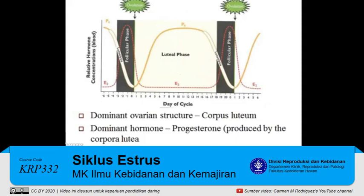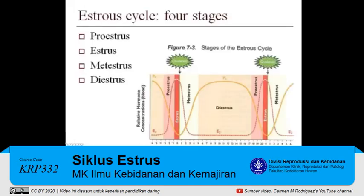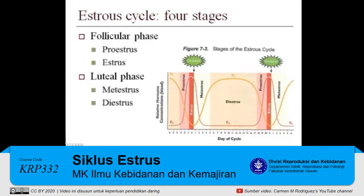Hence, progesterone is the dominant hormone present during the luteal phase. Figure 7-3 is a graphic representation of the four stages present within the estrus cycle: proestrus, estrus, metestrus, and diestrus. Proestrus and estrus are part of the follicular phase, while metestrus and diestrus are part of the luteal phase.